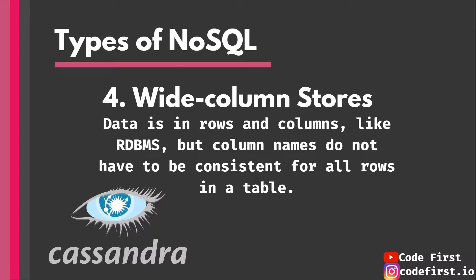Wide column stores are similar to relational databases in the sense that you also have rows and columns, but the difference is that column names do not have to be consistent, even inside the same table. Rows can have different attributes that they fill in information for. Facebook invented a database called Cassandra, which they use for their own data, and it's a wide column store NoSQL database.